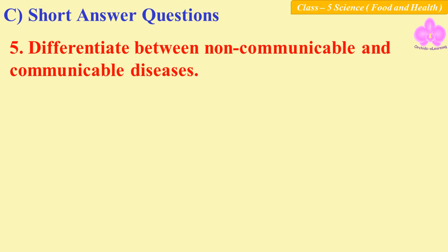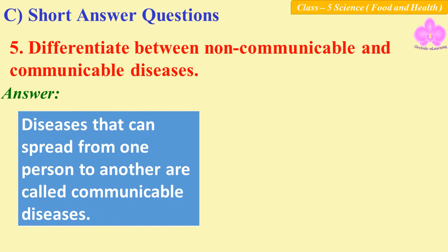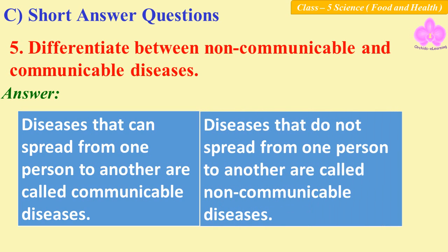Question number five: differentiate between non-communicable and communicable diseases. Diseases that can spread from one person to another are called communicable diseases, whereas diseases that do not spread from one person to another are called non-communicable diseases.